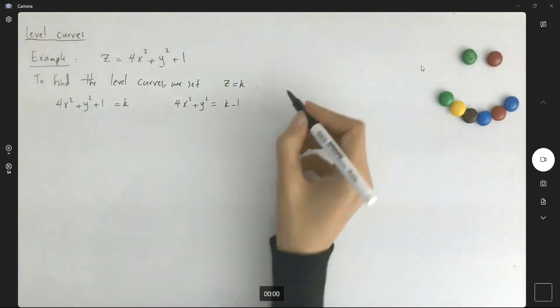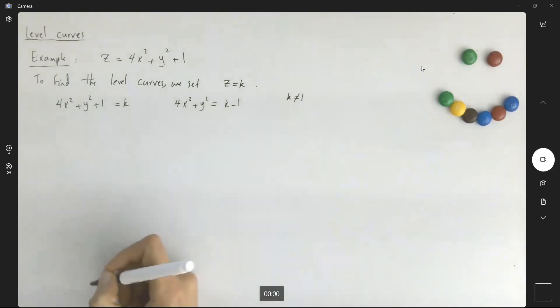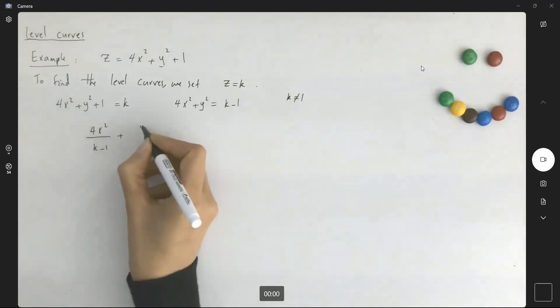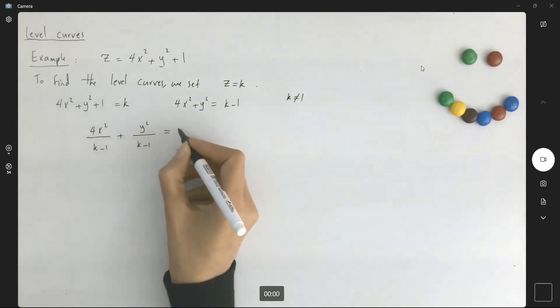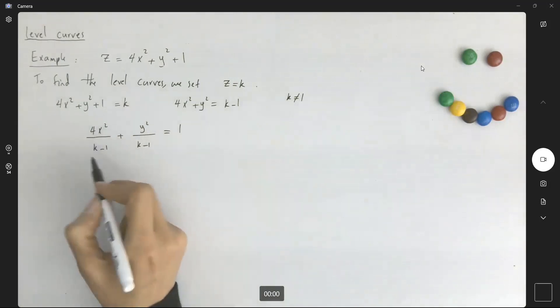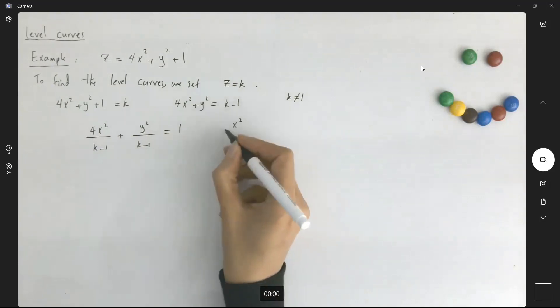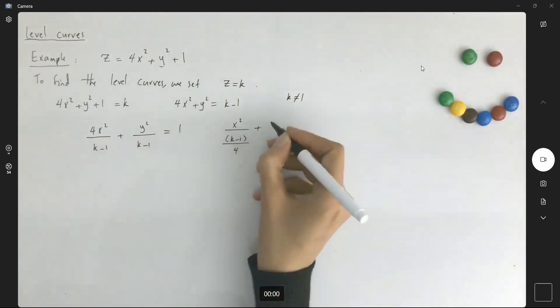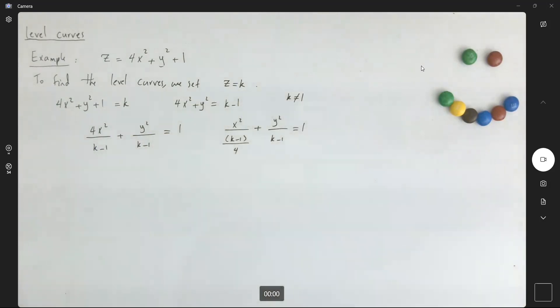So if k is not equal to 1, we can divide everything by k minus 1 and we get 4x squared over k minus 1 plus y squared over k minus 1 equals to 1. If you flip 4, you get x squared over k minus 1 over 4 plus y squared over k minus 1 equals to 1.